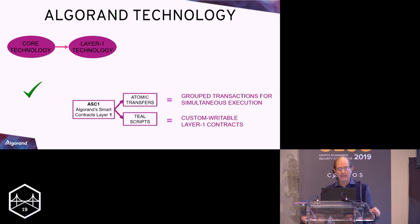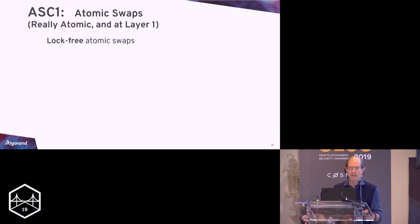Let's focus on this because there is no time for the assets. Layer one smart contracts come in two varieties: atomic transfers and TEAL scripts. Atomic transfers are grouped transactions for simultaneous execution. We believe that these are so important that we somehow prepare them for you just on an individual basis. And TEAL scripts are custom writable layer one contracts that you can actually do yourself. For lack of time, let me focus on atomic transfers. What is the simplest transfer? It's a swap. And this swap, by the way, this time rather than being atomic in name is going to be truly atomic, really atomic. Lock-free atomic swaps.